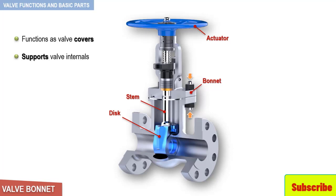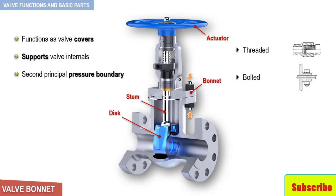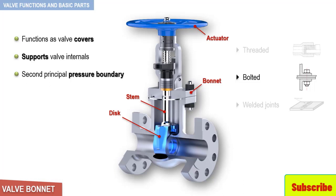The bonnet is the second principal pressure boundary of a valve. It is cast or forged of the same material as the body, and is connected to the body by a threaded, bolted, or welded joint. In our example, the bonnet is connected to the body by a bolted joint. In all cases, the attachment of the bonnet to the body is considered a pressure boundary, meaning that the weld joint or bolts that connect the bonnet to the body are pressure-retaining parts.